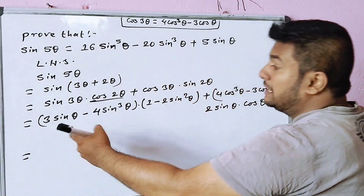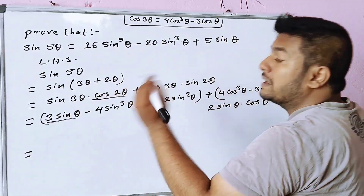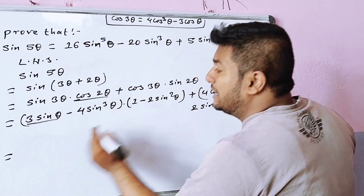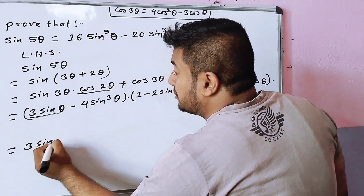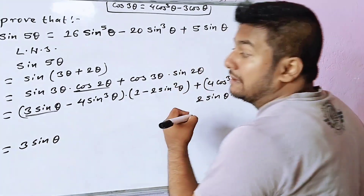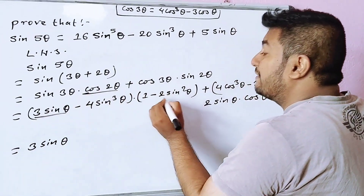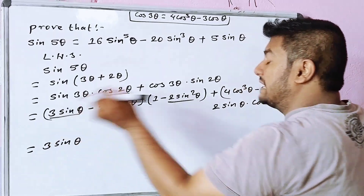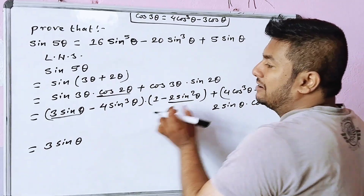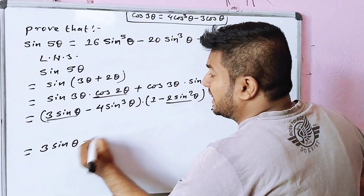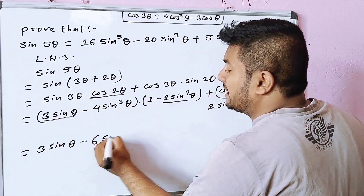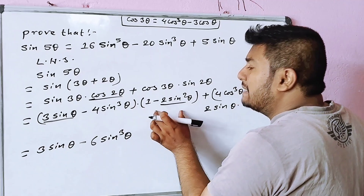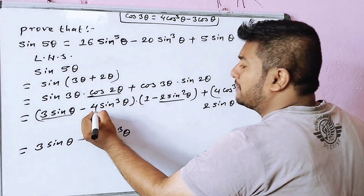Now we multiply 3sinθ by cos 2θ, and multiply sin 2θ terms. Multiplying 3sinθ into (1 − 2sin²θ), and then multiplying 3sinθ into sin²θ to get 3sin³θ terms.